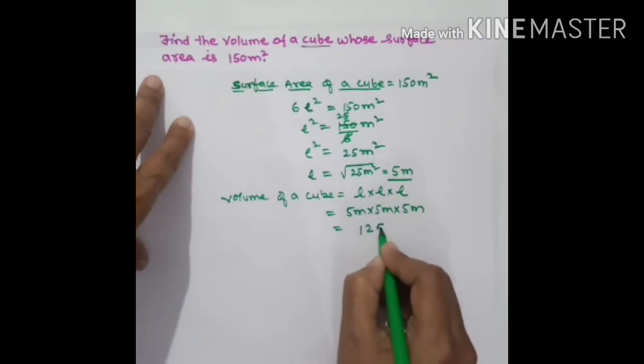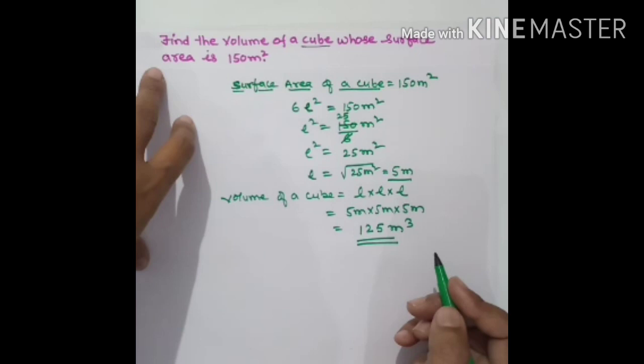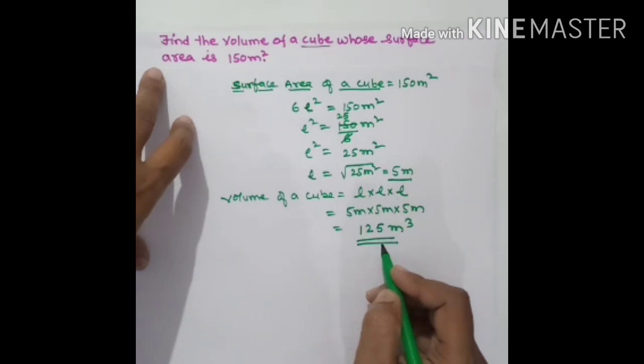It will be 5 meter times 5 meter times 5 meter, which equals 125 meter cube. The volume of the cube is 125 meter cube.